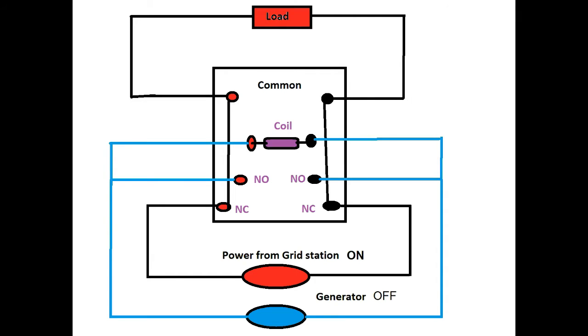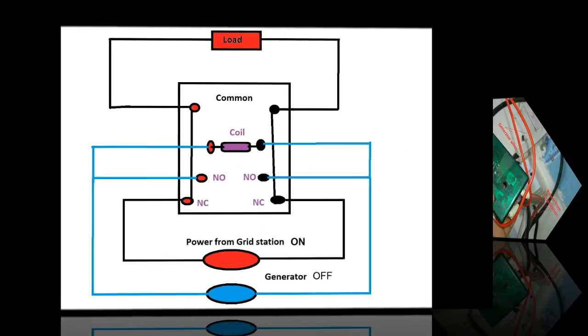When the generator is turned on the relay coil energizes and the contact moves from normally closed to normally open. And the load transfers from the grid station to the generator. Similarly when the generator turns off the coil de-energizes and the contact moves from normally open to normally closed. And the load connection transfers to the grid station.